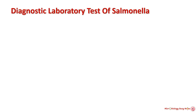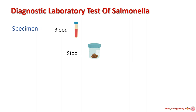For diagnostic laboratory tests, in enteric fever and septicemia, blood gives positive results in the first week of infection. In enteric fever, stool specimens give positive results after the second week of infection. When enterocolitis occurs, stool samples give positive results from the first week. Bone marrow and urine samples can also be used to establish the diagnosis.